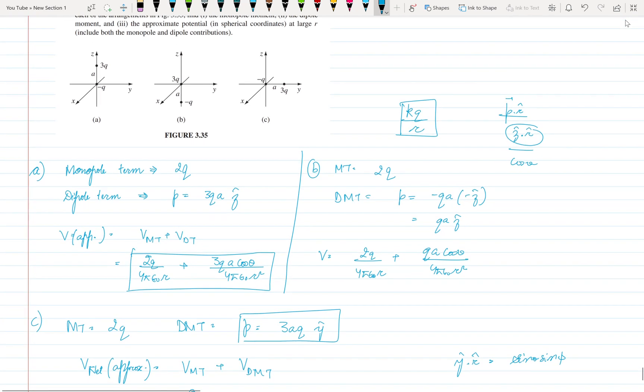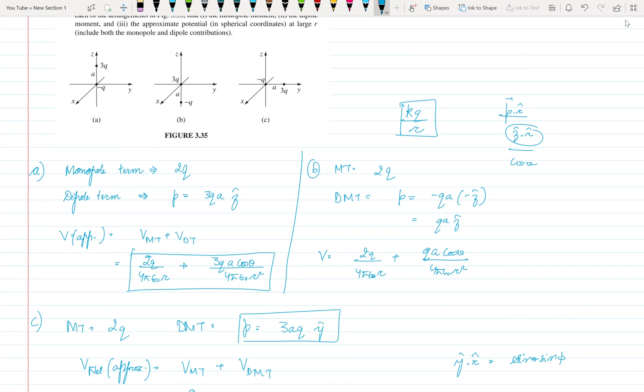So I hope you got the point of the problem that if the dipole moment term is in some other direction other than Z cap then we need to apply the standard formula, or else you can apply the direct cos theta formula easily. So that's all for this video. See you in the next video.